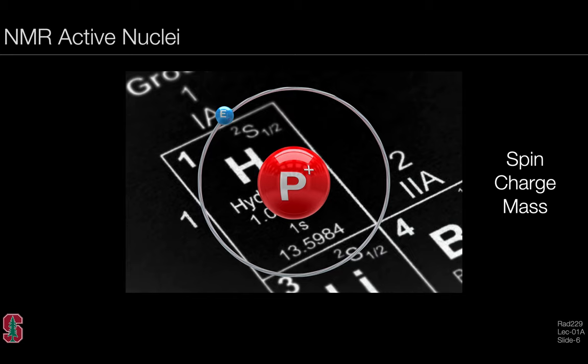Fundamental to all of MRI is the NMR active nucleus. In this case, we're interested in the hydrogen nucleus, which is comprised of a proton and an electron. While we're generally familiar with the concepts of charge and mass, it's not always well appreciated that there's also an intrinsic property called spin. The combination of these three inherent properties—spin, charge, and mass—fundamentally underlie the NMR phenomena.